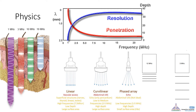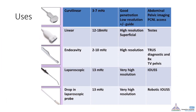The more the frequency of the probe, the less the penetration and the greater the resolution. In the abdomen, a 3 MHz probe is preferred, which allows better penetration power. In testicular ultrasound, the 12–18 MHz probe is usually used. In transrectal ultrasound, the 10 MHz probe is preferred.